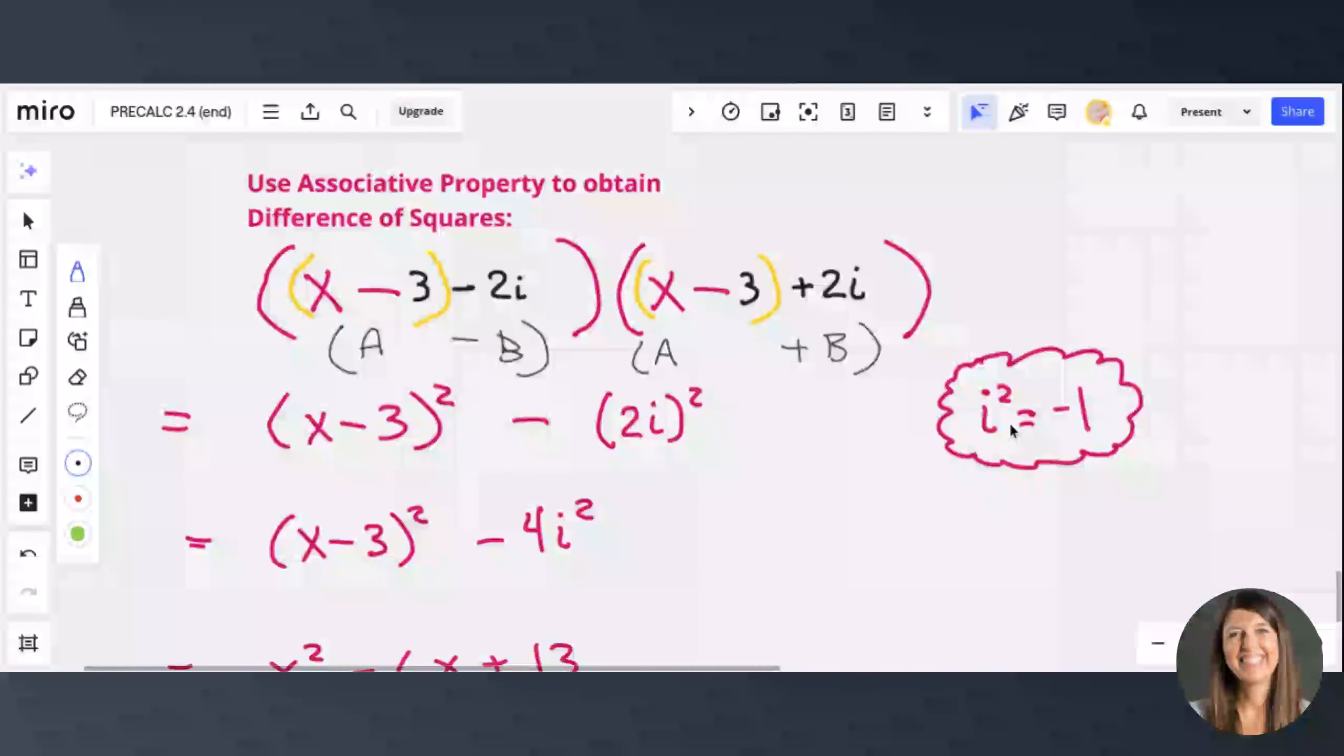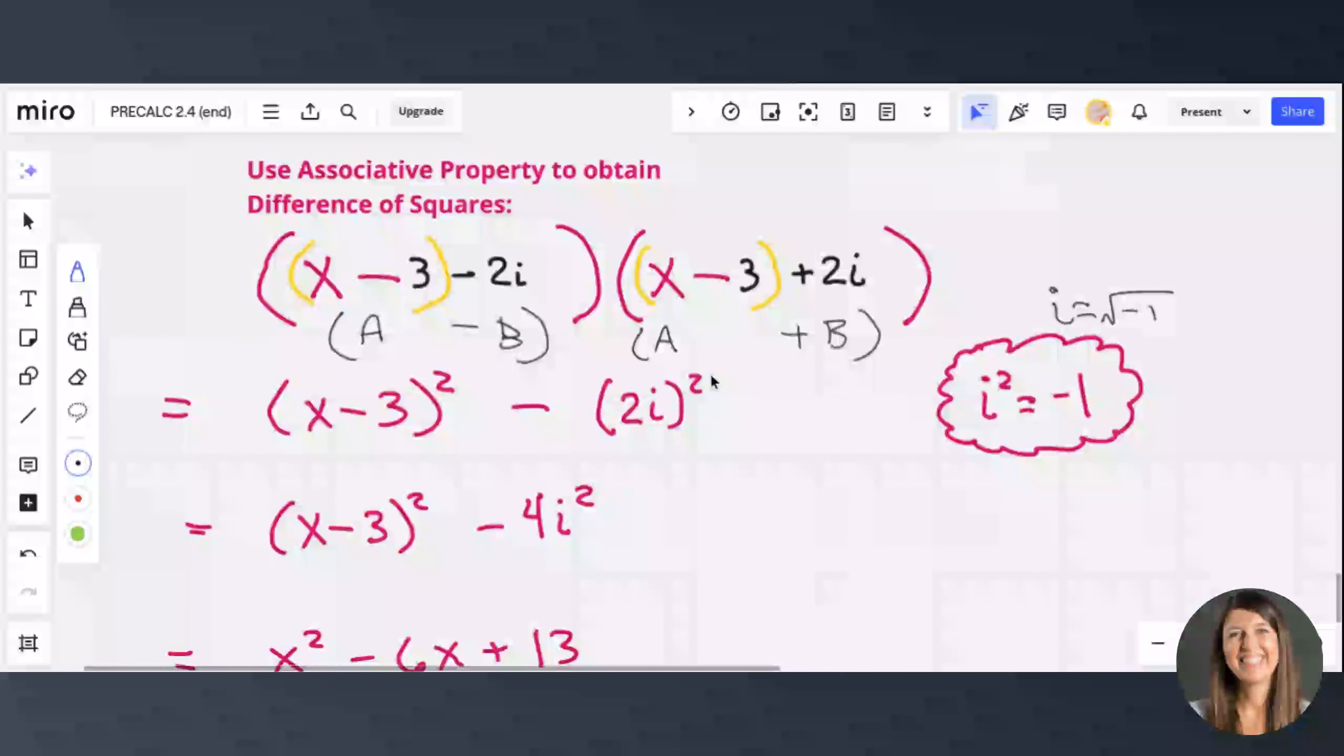Remember, i squared is negative 1. And we know that because by definition, i is the square root of negative 1. So we're going to need to know that because when we square 2i, we're going to get the 4i squared right here.